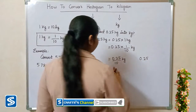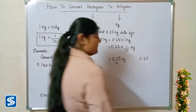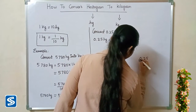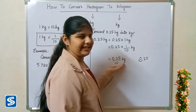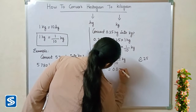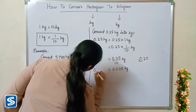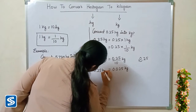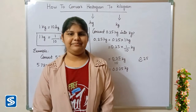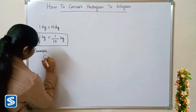The easy way to divide a decimal number by 10 is to move the decimal point one place to the left, because 10 has only one zero. So when we divide 0.25 by 10, our answer will be 0.025 kilograms. So 0.25 hectograms is equal to 0.025 kilograms.